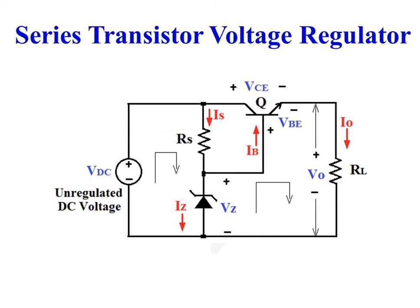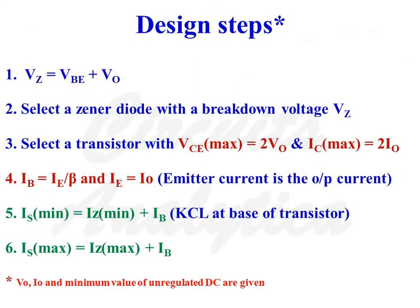This is the circuit diagram of a series transistor voltage regulator. The unregulated DC voltage source is denoted as VDC, and the unregulated output voltage is available across the load resistance RL. The steps involved in the design of a series transistor voltage regulator are as follows.